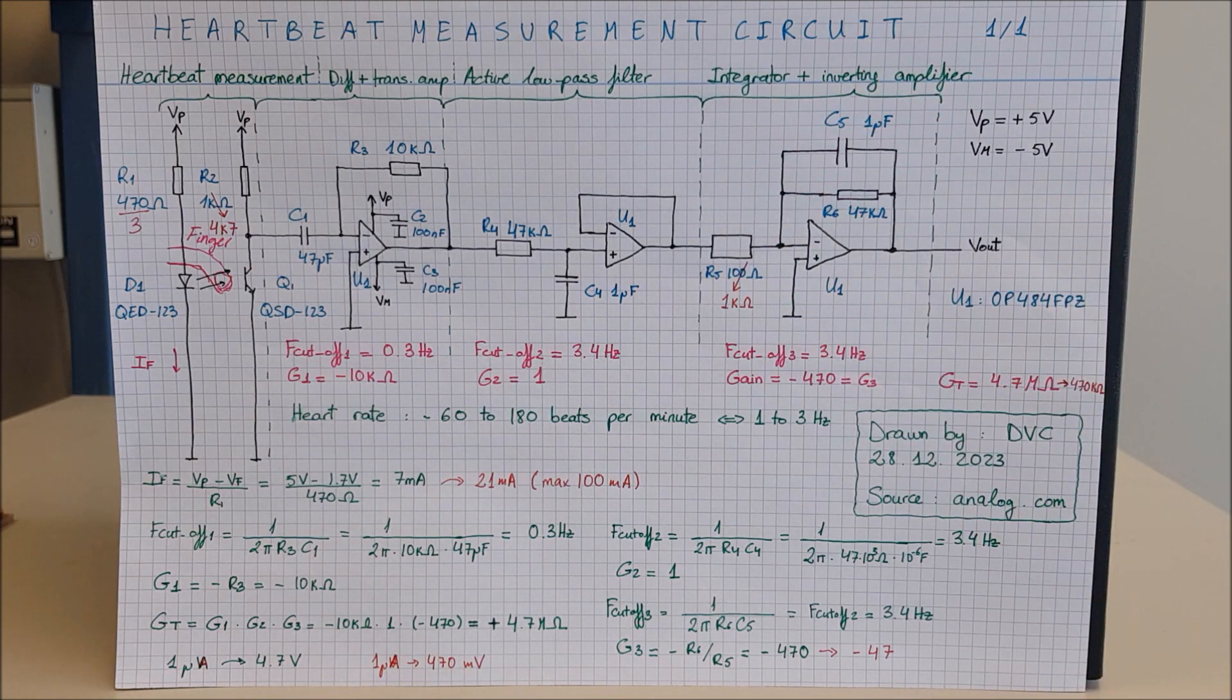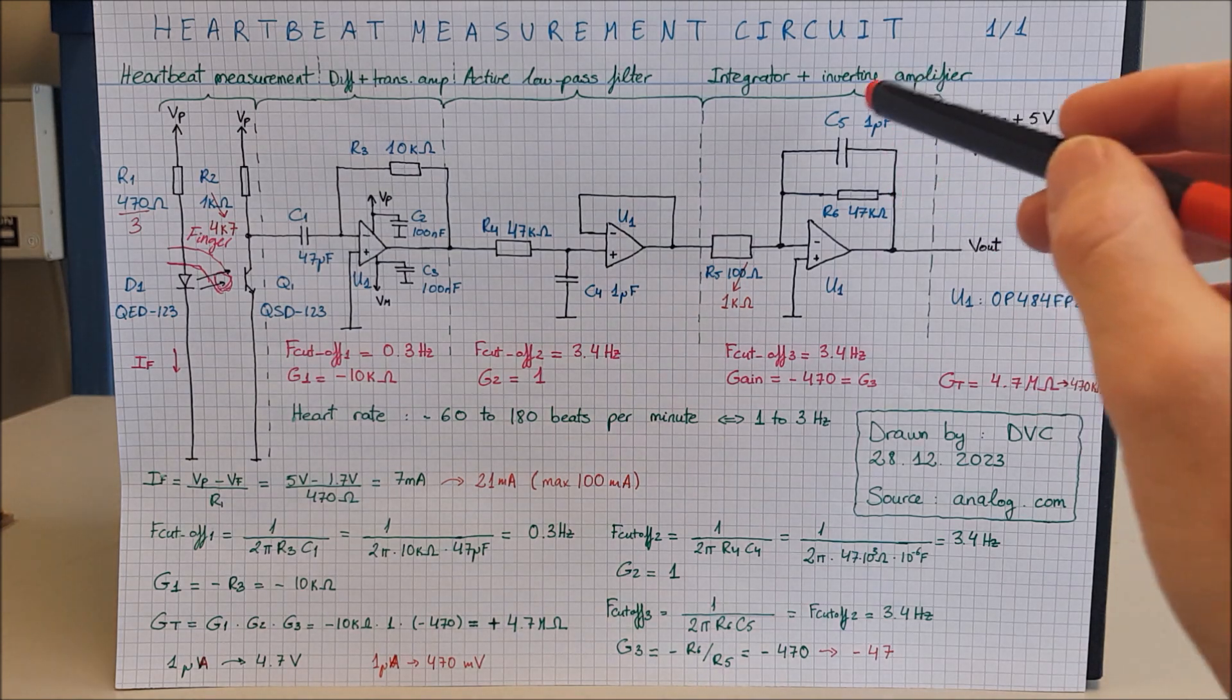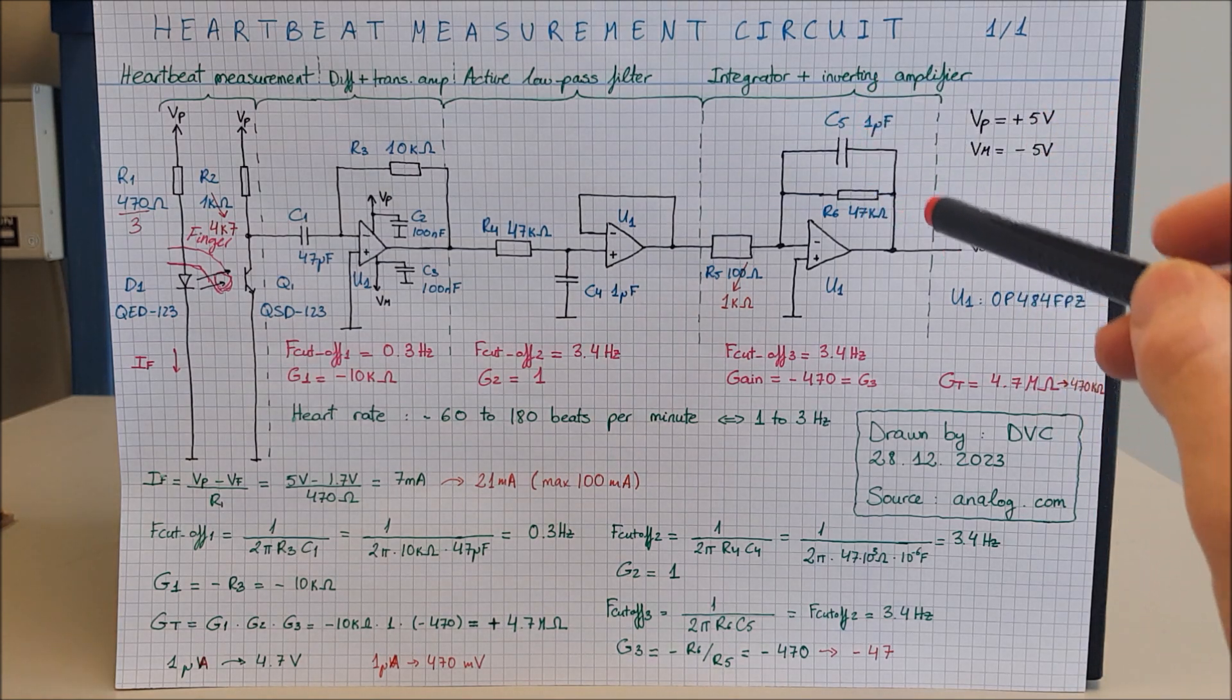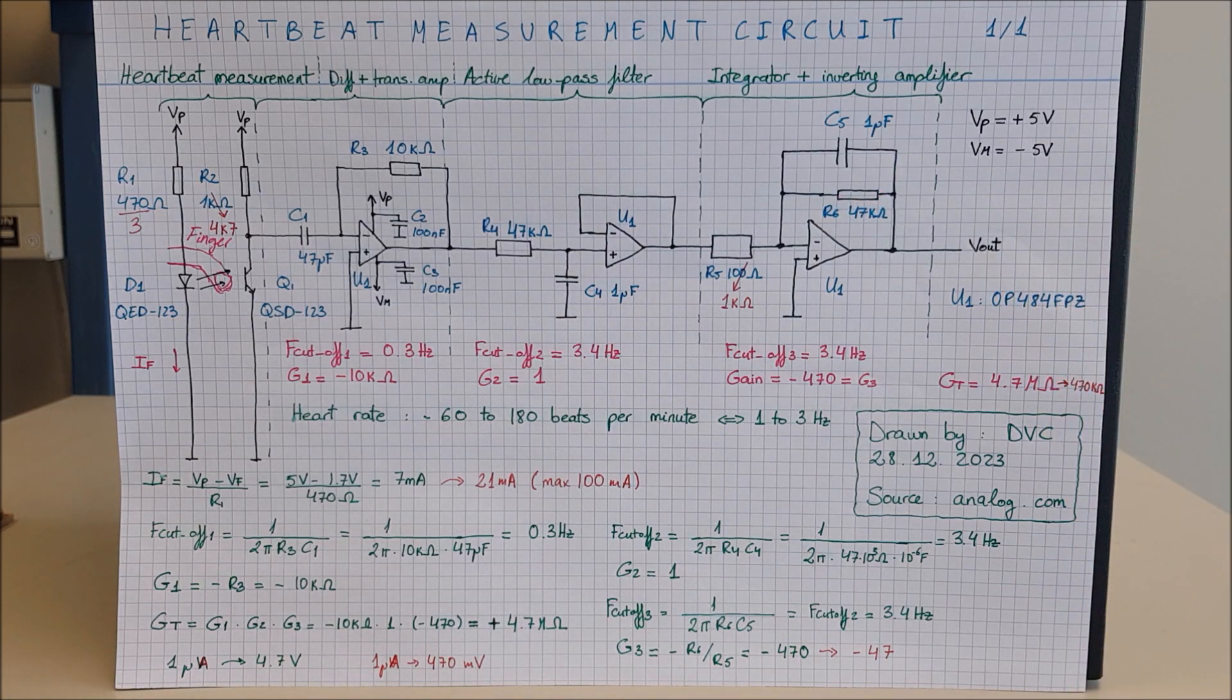Moving on, let's look at the last stage. We want to further amplify the signal and filter it. To do so, we are using an integrator. It's calculating the integral of the signal. Basically, this is a low-pass filter with a frequency given by 1 divided by C5 times R6 times 2 pi. That is again 3.4 Hertz.